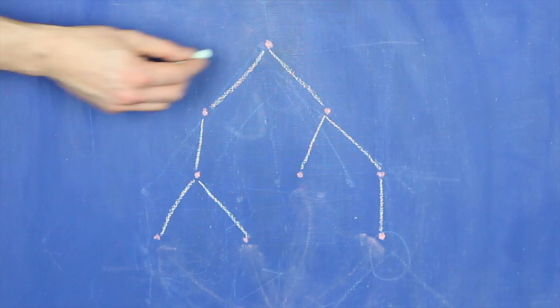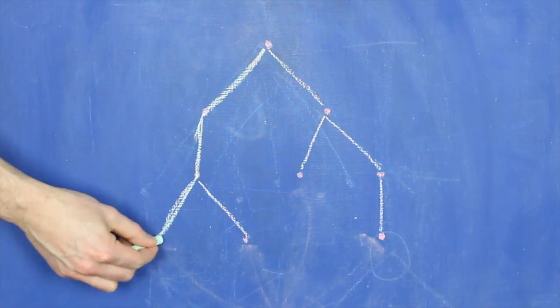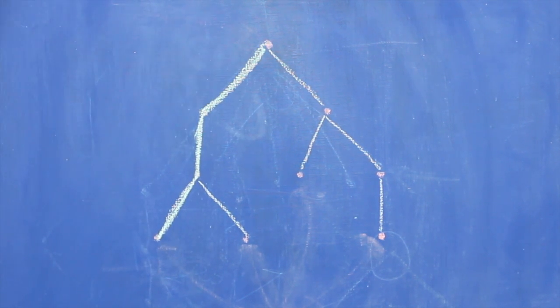For our purposes, a branch will be a path from the root of the tree down to one of its leaves.